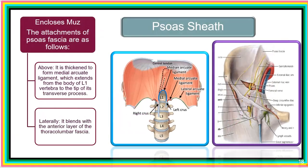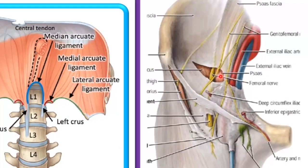Before we get to the next muscle, we will look at the sheath covering the psoas major. Here is the psoas major muscle covered by its fascia, which forms the psoas sheath. This sheath has attachments both superiorly, laterally, medially, and inferiorly.